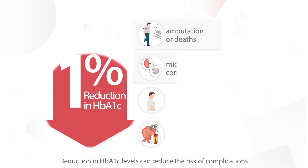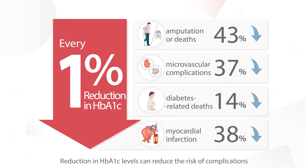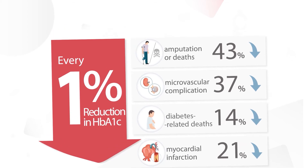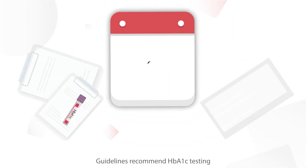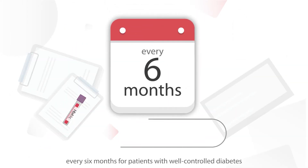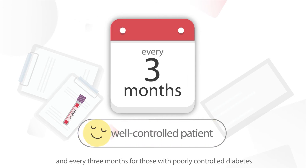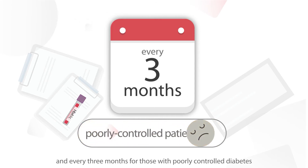Reduction in HbA1c levels can reduce the risk of complications. Guidelines recommend HbA1c testing every 6 months for patients with well-controlled diabetes and every 3 months for those with poorly controlled diabetes.